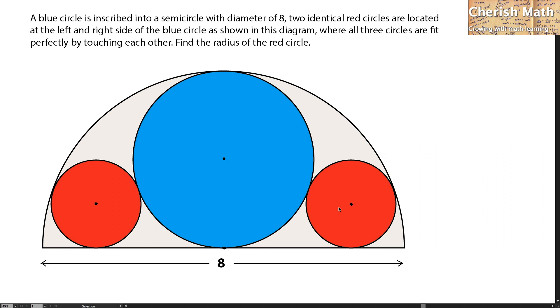Let me connect the centers of all the circles with lines, and this is how it looks like. In the first step, I need to find what is the value of radius for the blue circle.